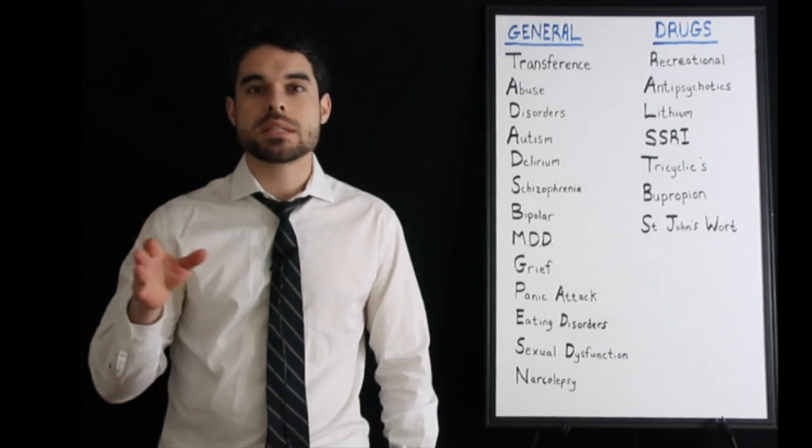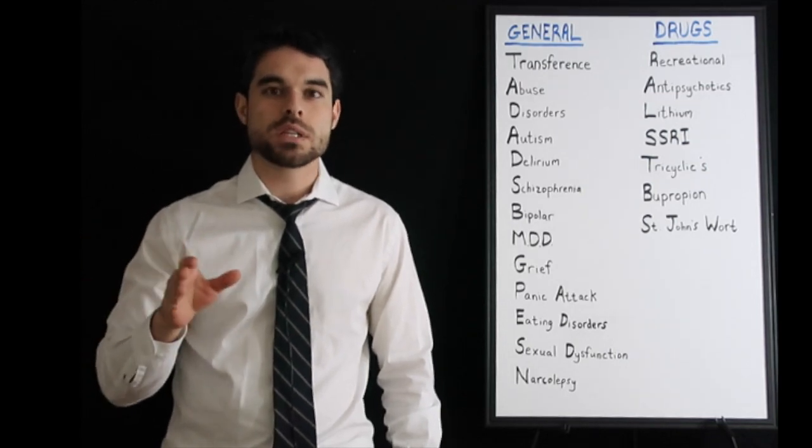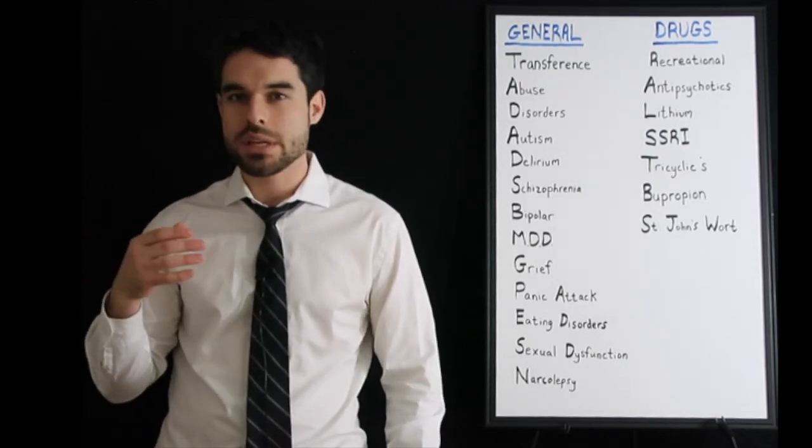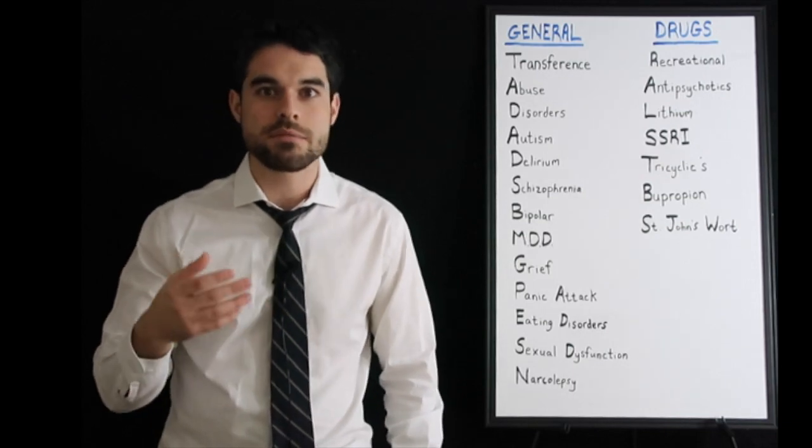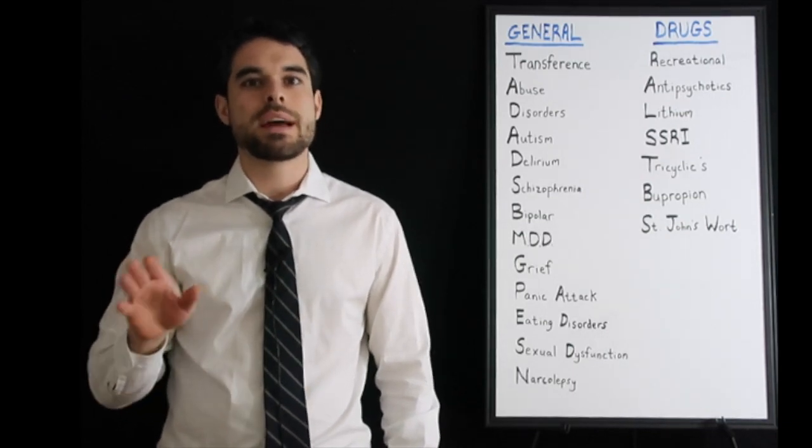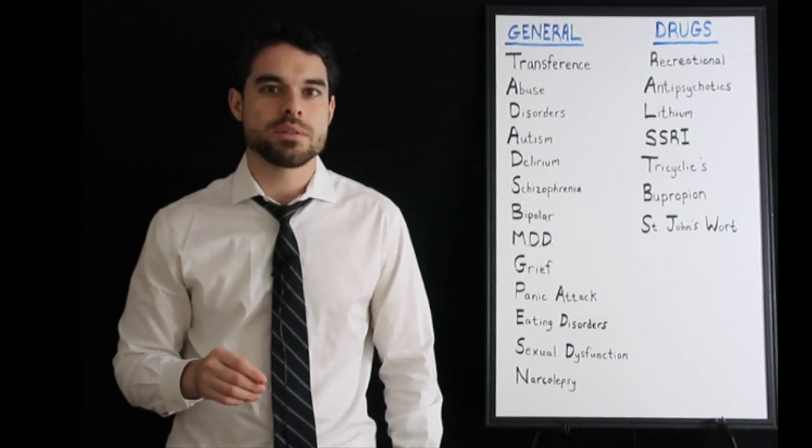Normal grief: this happens between 6 and 12 months is around normal if you lose a loved one to grieve or even if you think you hear their voice or you may have seen them. That's normal up to around a year. After a year, this is pathological and should be dealt with.